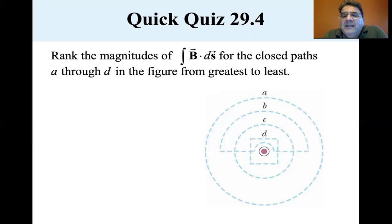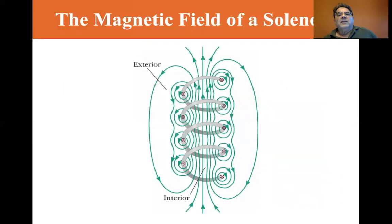So A, C and D are all the same and B is equal to zero because it doesn't enclose it. So A equals C equals D and they're all greater than B, which is equal to zero. Okay. And that's it for this section.